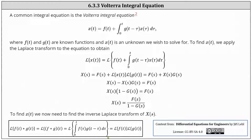This is coming from our notes below, where the Laplace transform of the convolution of f of t and g of t is equal to the Laplace transform of f of t times the Laplace transform of g of t. So going back to our work, the Laplace transform of x of t is equal to big X of s, and then times the Laplace transform of g of t, which is equal to big G of s.